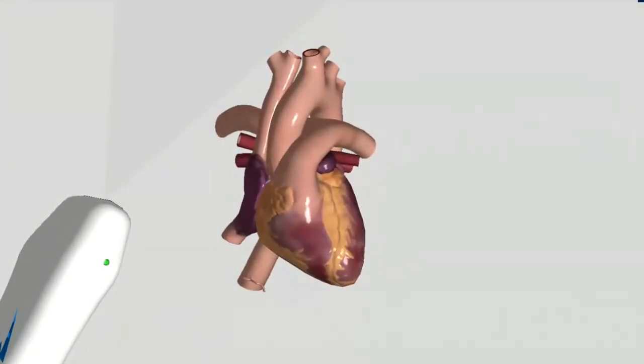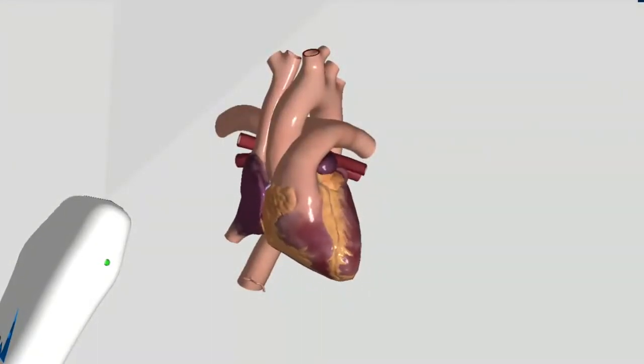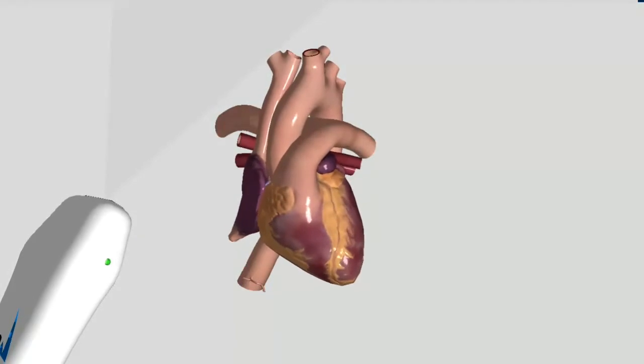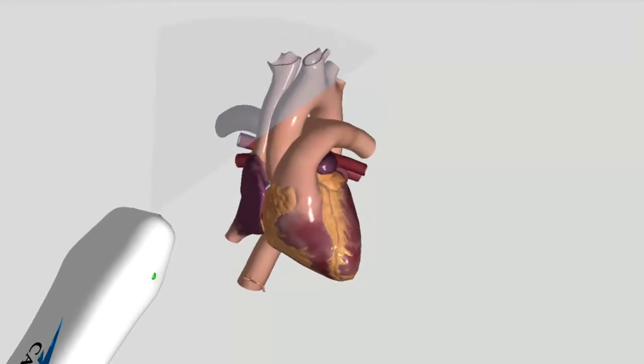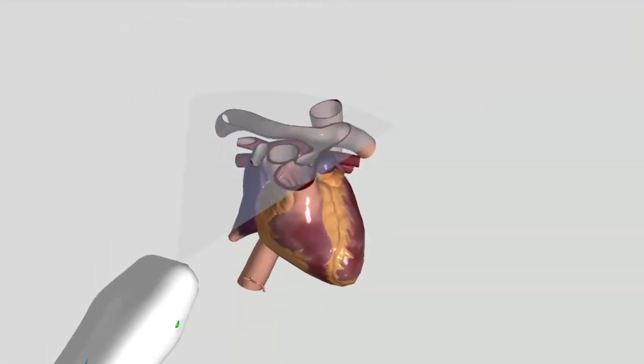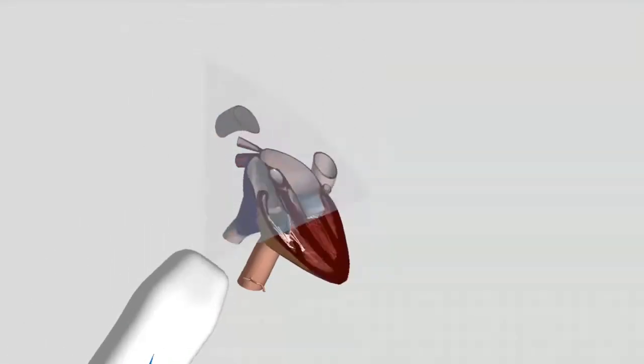This is going to be a walkthrough of basic cardiac anatomy using the CAE Vimedix Ultrasound Simulator. I'm going to use this simulated ultrasound wand on the left that is normally used to learn ultrasound techniques, except here instead we'll be using it to explore the anatomy of the 3D heart model.